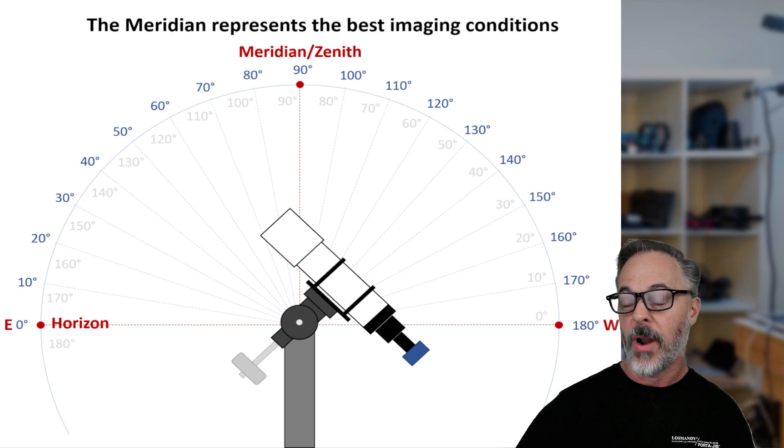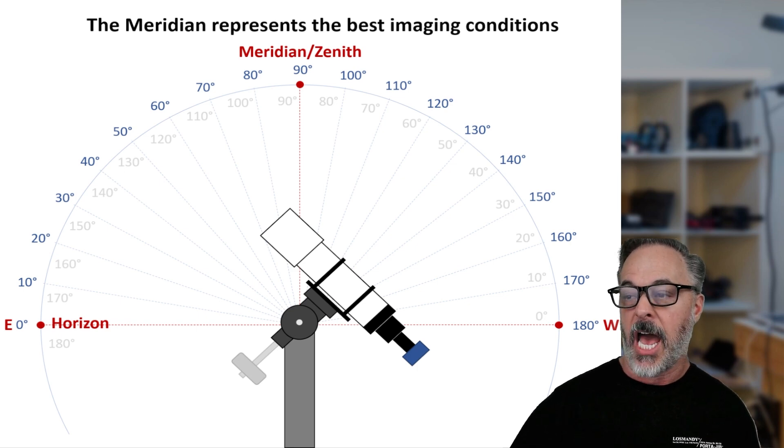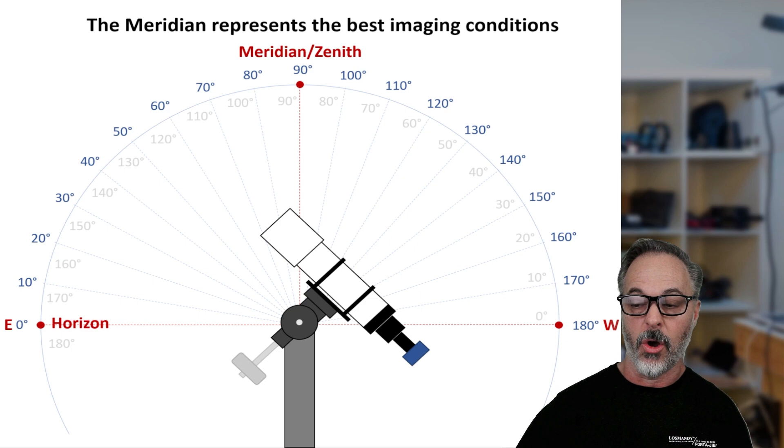So in this diagram, you see here, we have just an example telescope here in the middle. We have the Eastern horizon on the left and the Western horizon on the right and just degrees in the sky in terms of altitude.